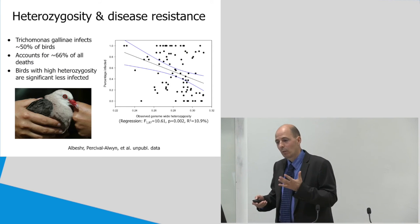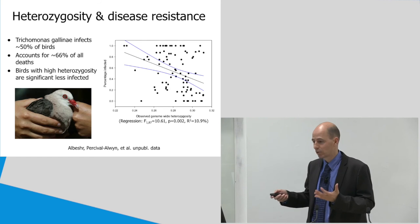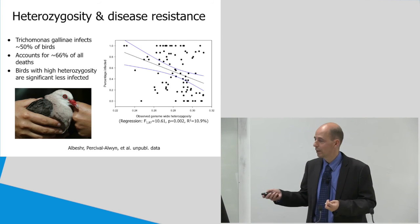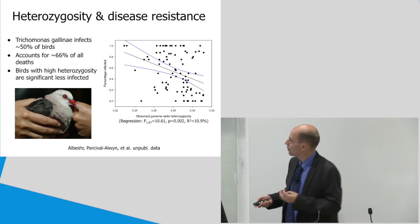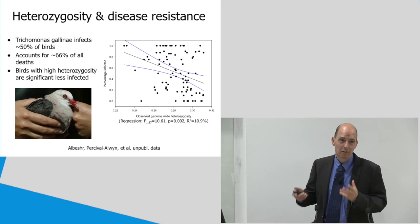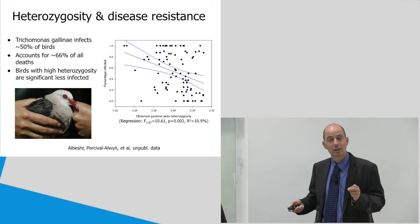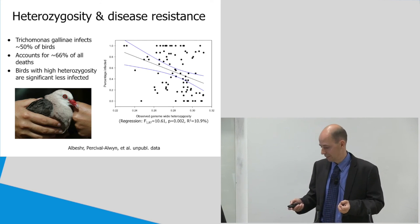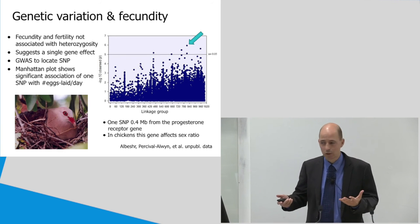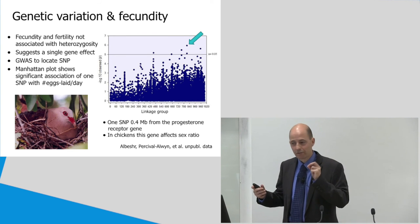Another point what we looked at is how heterozygosity affects the susceptibility of birds to Trichomonas infection. About 50% of birds, at any point in time, are infected by this parasite, and it accounts for about two-thirds of all deaths in birds in the wild. Now, what we show here is that the observed genome-wide diversity, heterozygosity, is significantly explaining variation in the percentage of infected birds. With other words, birds which have a high level of gene diversity, are significantly less infected than individuals with a low diversity. We also did analysis on fertility and fecundity. However, those showed that there was no association between genome-wide heterozygosity and fecundity. And this suggests that it is not a genome-wide effect, that there are particular genes which are affecting these traits.